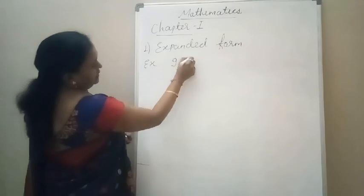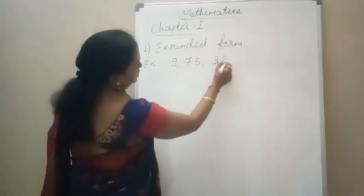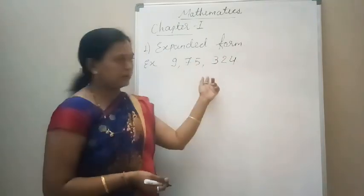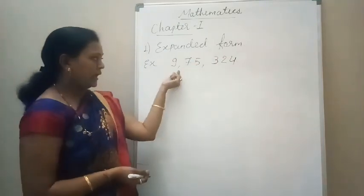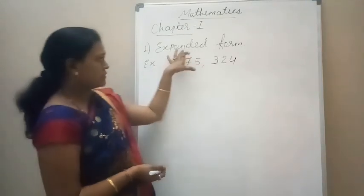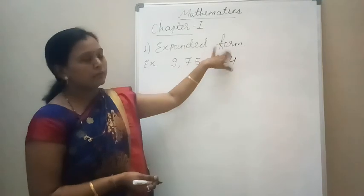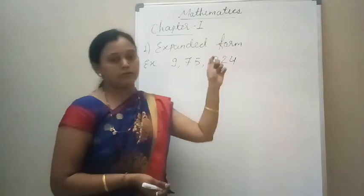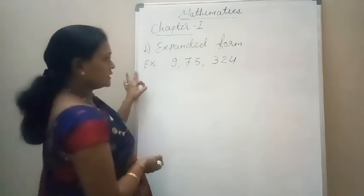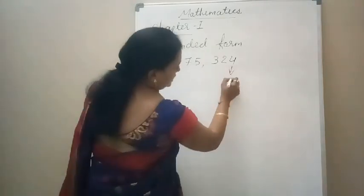The number here is 975324. Expanded form means we will write down the number as a sum of the place value of each digit. So, the first thing we will do is identify the place of each digit.